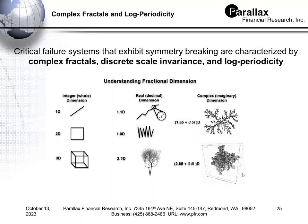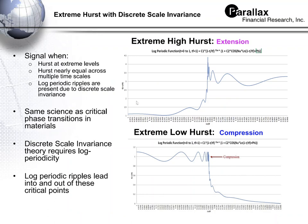There are cases in nature with complex dimensions, and it turns out our markets are one of those structures. In markets, the form of the answer we seek for critical points has two components — a real and imaginary part. The real part is expressed as an acceleration toward exhaustion. The imaginary part creates a ripple we call a log periodic ripple. If you plotted this ripple on log paper, it would look like a sine wave — a perfect even cycle.